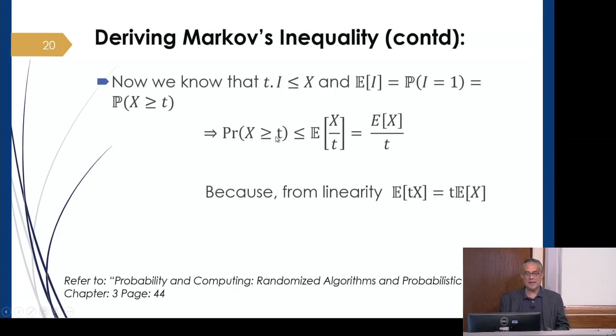So the probability that x is greater than or equal to t is the expectation of I, which equals E[X]/t by using this relationship. From the linearity of expectation, we can immediately conclude this because E[tI] = t·E[I]. This is simply E[X] divided by t because t is a constant.